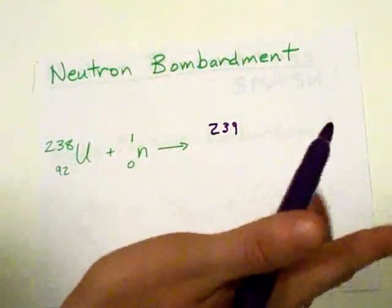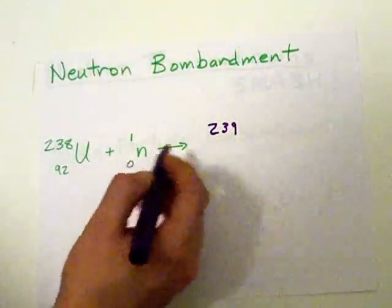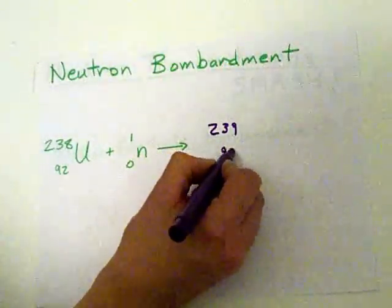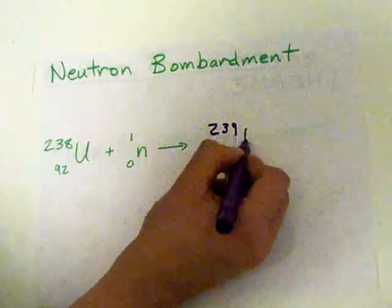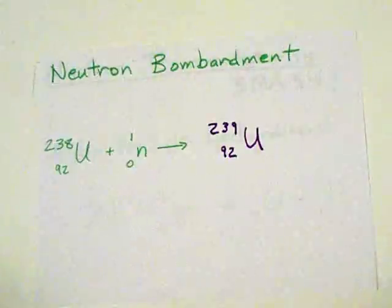We're not going to change how many protons there are either. 92 plus 0 makes 92. Because there's 92 protons, this ends up giving you uranium-239.